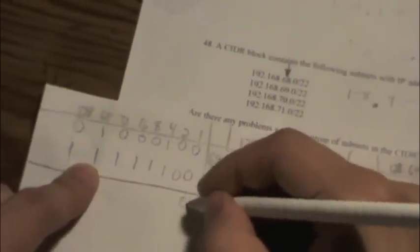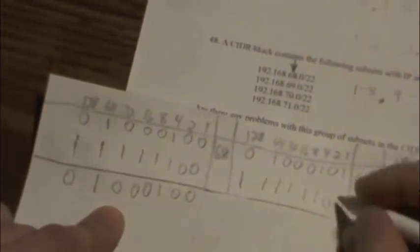I've written the subnet mask of the third octet in here, and we're going to mask it with these other values to see if they fall within the same subnet. If we perform the AND function, we have 0, 0, 1, 0, 0, 0, 1, 0. Converting that to decimal, it looks like it falls under the 68 subnet.